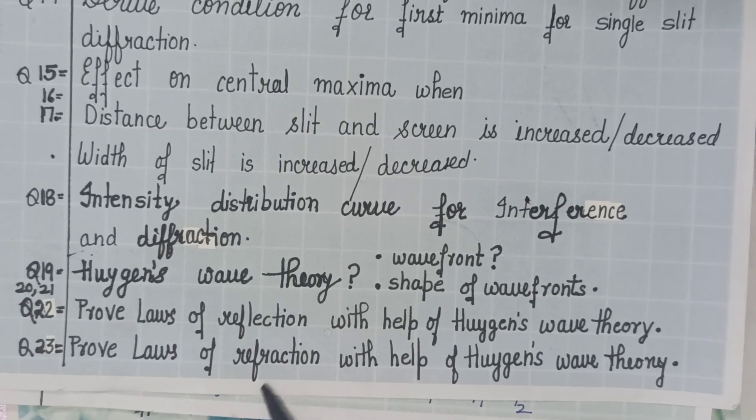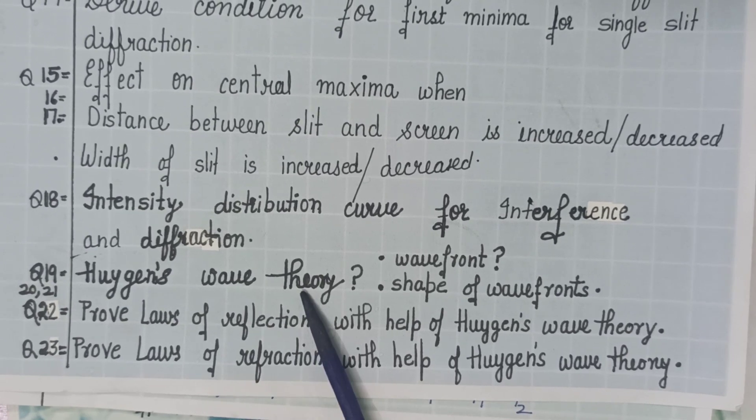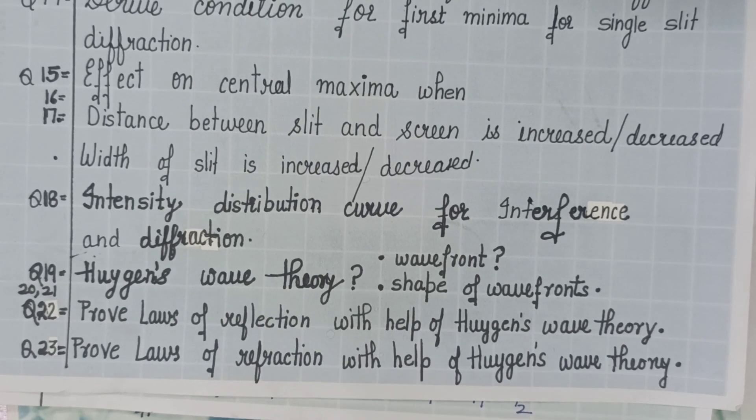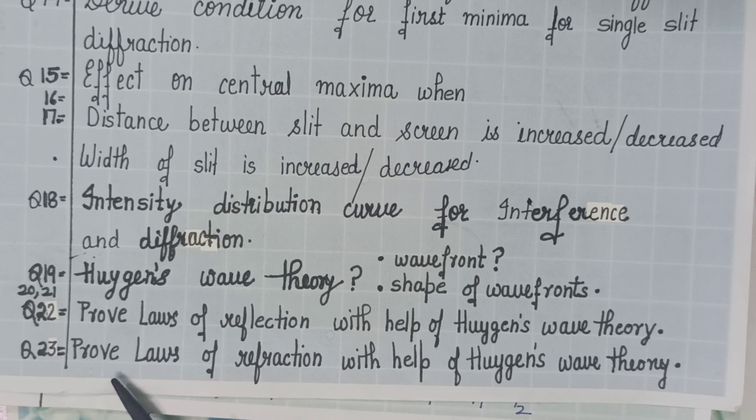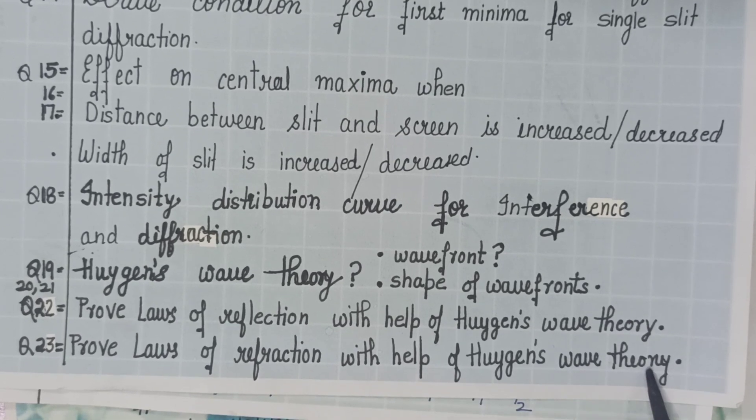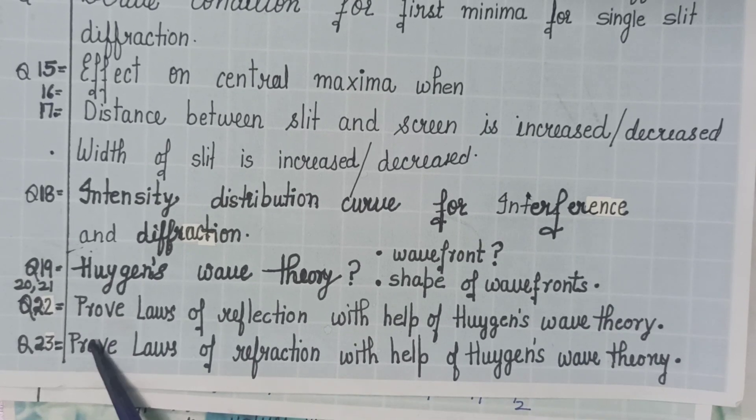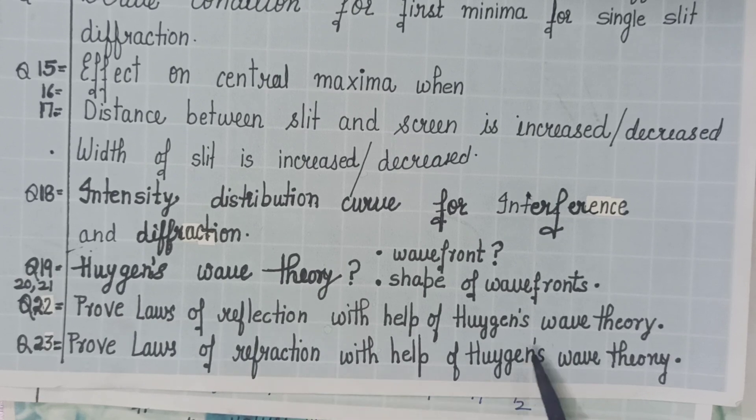Then, in Huygens' wave theory three questions are possible. For me, Huygens' wave theory four points are there or prove the laws of refraction with help of Huygens' wave theory. They are more important than prove laws of reflection with help of Huygens' wave theory.